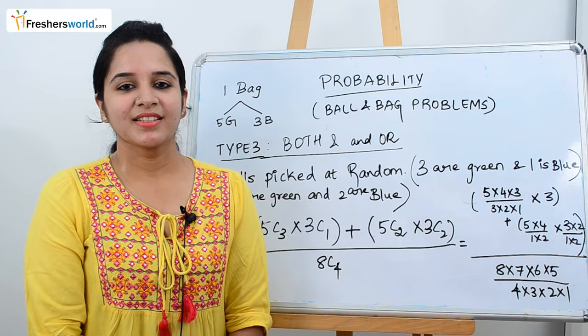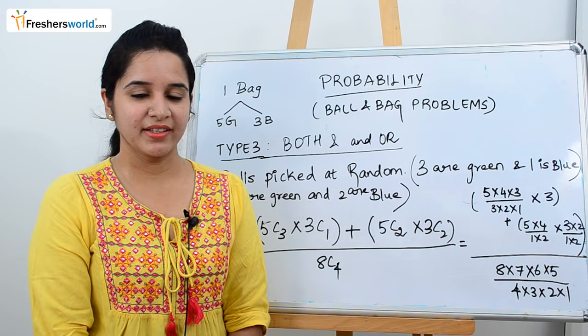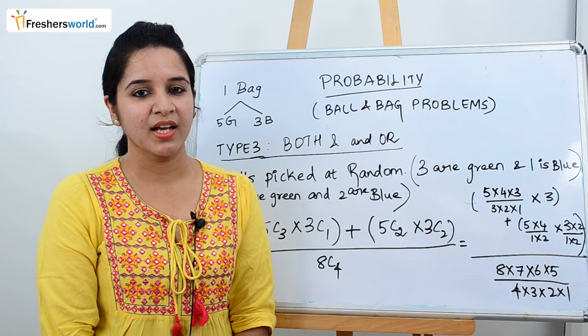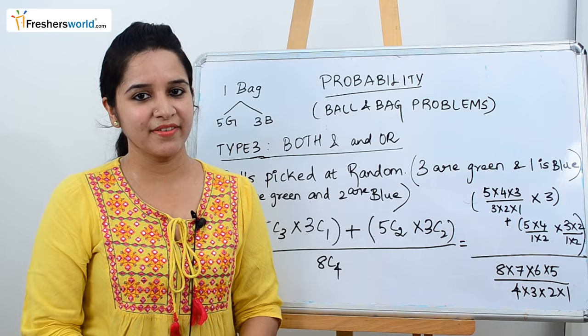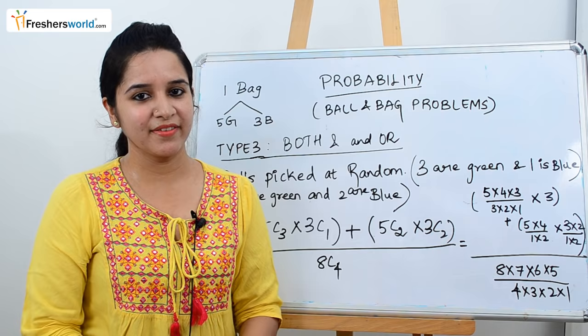So today we have dealt with three types of ball and bag problems. As mentioned, there are seven types in total. In the next video, I will be covering the remaining four types. If you have covered all seven types, that's everything you can find in ball and bag problems. If you are looking for jobs, please register at freshersworld.com.